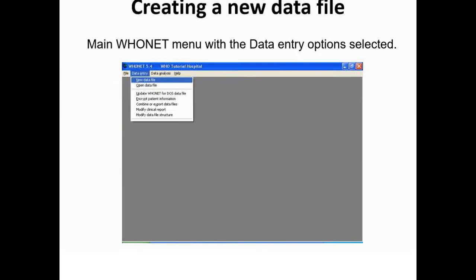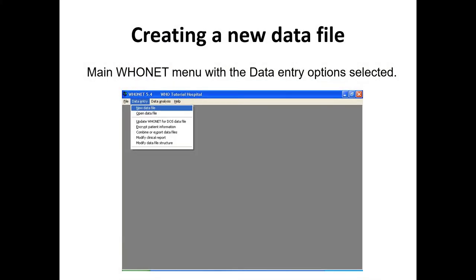At the beginning of this presentation we will choose the first option called New Data File. These slides were prepared in India using WHONET 5.4, which I haven't seen in a very long time, but everything is almost identical — we've added and deleted a few things. We're waiting to update these slides until the new software is stable. The first two options are New Data File and Open Data File.